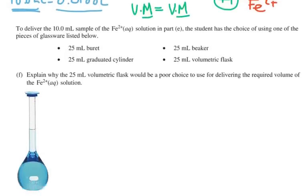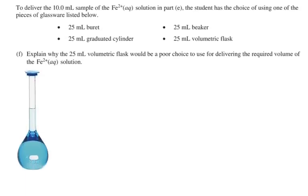The last little section says to deliver the 10 milliliter sample of Fe2+, the student has a choice of using a burette, a graduated cylinder, a beaker, or a volumetric flask. And explain why the 25 milliliter volumetric flask would be a poor choice for use for delivering the required volume. And the idea here is a 25 milliliter volumetric flask can make a very accurate measurement of 25 milliliters. So it's great for a 25 milliliter sample, but it would be awful for a 10 milliliter sample because you would just be estimating. On a graduated cylinder, there's only one mark, and that is for whatever size is listed. So this would be great for making 200 milliliter measurements, but for a 25 milliliter volumetric flask, it would only be good for 25 milliliters. And that's the idea, that it's only good for one measurement.